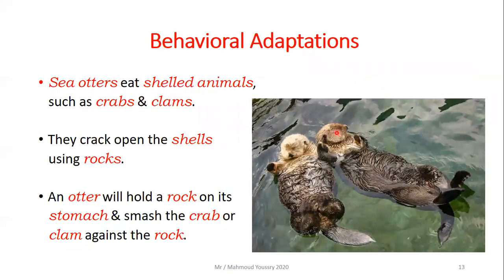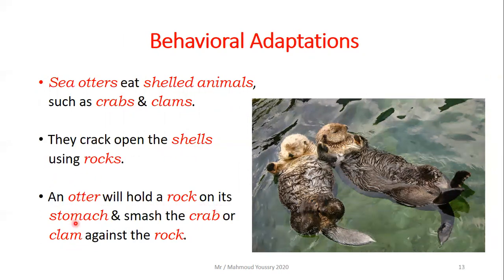Other behavioral adaptations include sea otters. Sea otters eat shelled animals like crabs and clams. They crack open the shells using rocks. An otter will hold a rock on its stomach, then smash the crab or the clam against the rock.